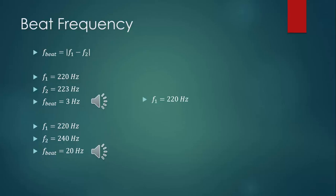One final example: again the 220 Hz, now combined with 440 Hz. For the musicians out there, these two frequencies are an octave apart — when you double the frequency, you go up an octave. The beat frequency here would be 220 Hz, so this probably won't sound like a fluctuation between loud and quiet; it'll kind of sound like one continuous noise.